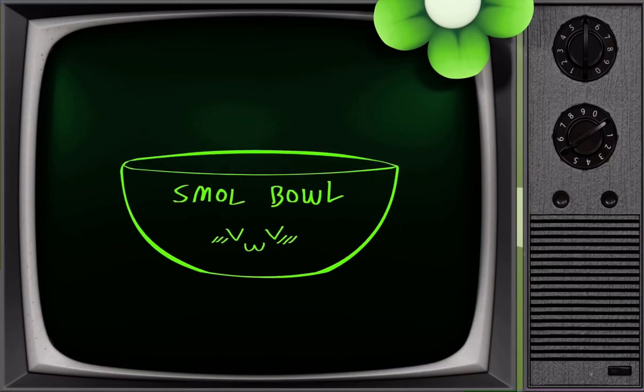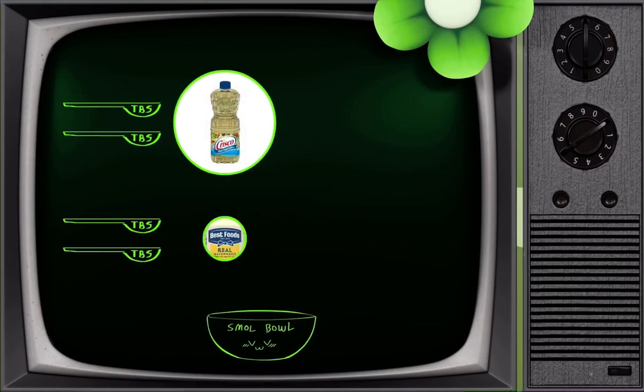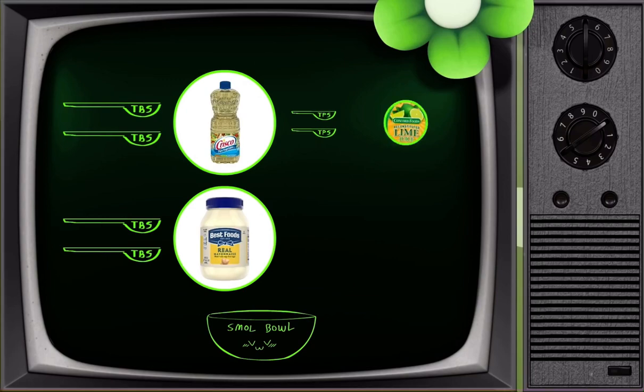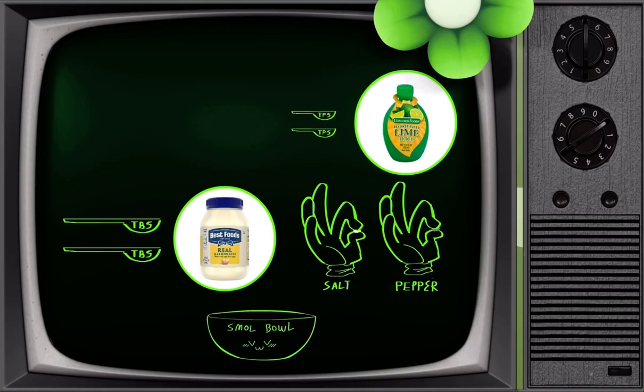In a smaller bowl, combine two tablespoons of vegetable oil, two tablespoons of mayonnaise, two teaspoons of lime juice, and a pinch of salt and pepper. If you want something more authentic, you can use two tablespoons of melted clarified butter instead of the vegetable oil.